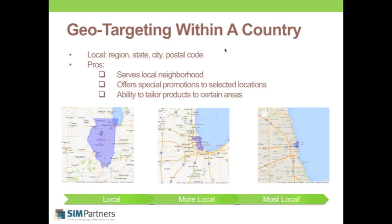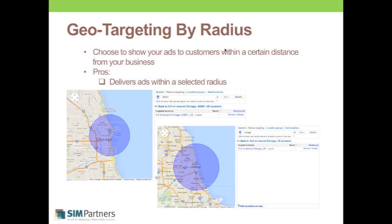To take it a step further, you can implement geo targeting by radius. In these screenshots, I've set a radius targeting of two miles around zip code 60601, which is downtown Chicago. The second screenshot is broader — 10 miles around what is identified as the Chicago city center. This is really useful for businesses that know their target traffic is within a specific distance from their location, whether that's walking distance or driving distance.